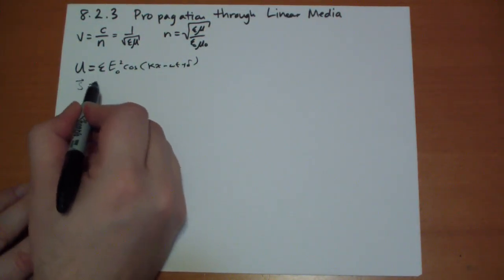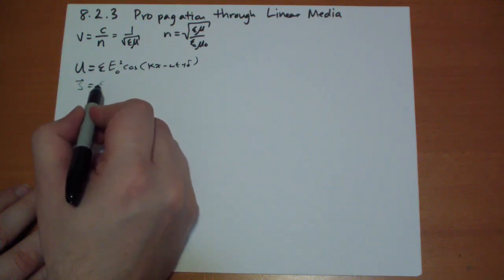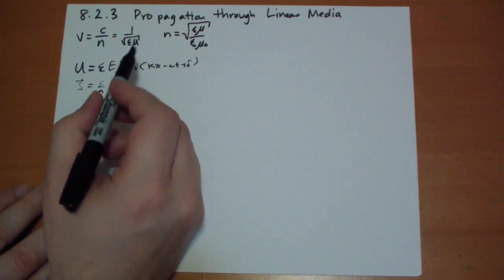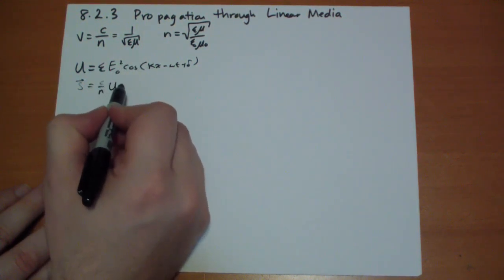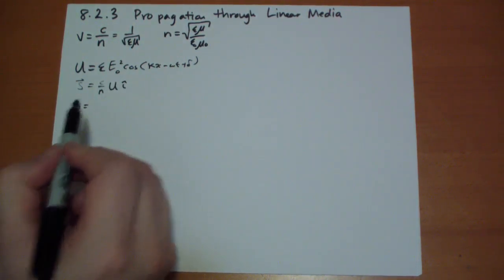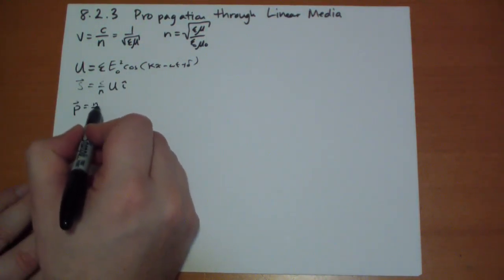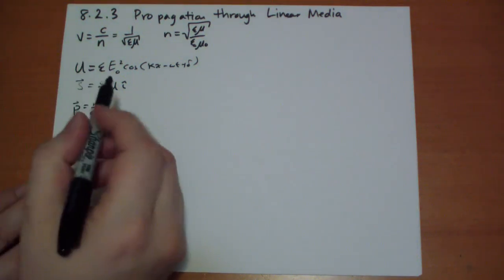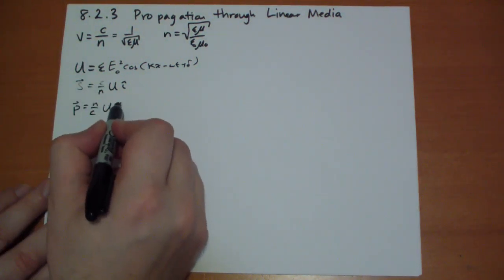S vector is equal to c over n, the index of refraction, times u in the i hat direction. Our momentum vector is equal to n over c, we just flip it over there, of u in the i hat direction.